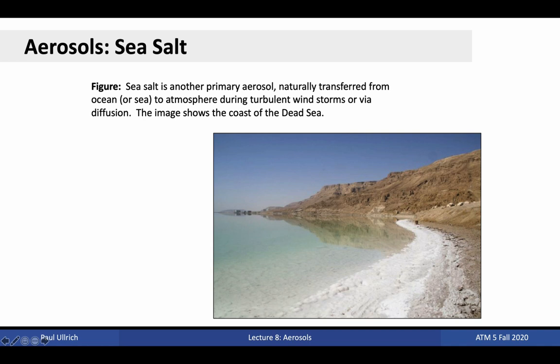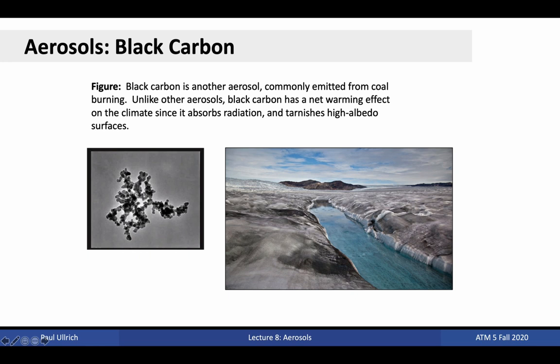Another natural aerosol is sea salt, which is naturally transferred from the ocean or sea surface during turbulent windstorms or via natural diffusion. Black carbon is another kind of aerosol that is a natural product of burning vegetation or fossil fuels, particularly dirtier forms of fuel such as coal. The dark color of this aerosol makes it highly absorptive to incoming radiation, causing atmospheric warming as radiative energy is absorbed. When it finally settles out of the atmosphere, it can darken the resulting surface and drive down its albedo. For instance, if deposited on snow, it will result in far more radiation being absorbed by the surface and can drive acceleration in snowmelt.